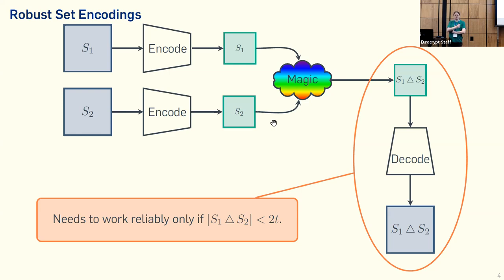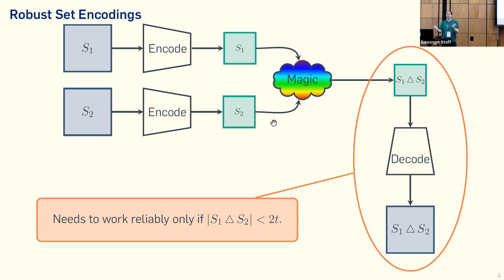From that, we can easily build a property-preserving hash function. We use the encoding function simply as our hash function. To evaluate, we do the magic, then we decode. If decoding fails, we say the symmetric set difference was large. If decoding does not fail, we get a set, and we can simply count how many elements are in the set and check: is it smaller than 2T or not?